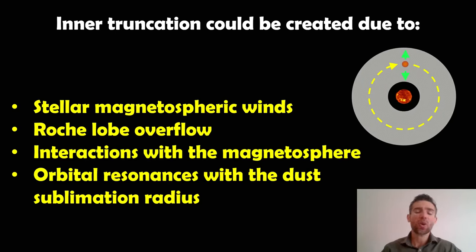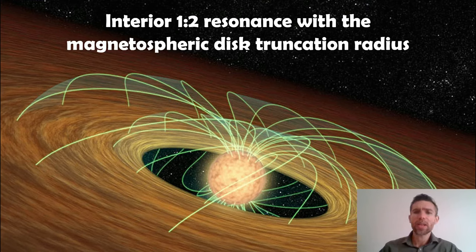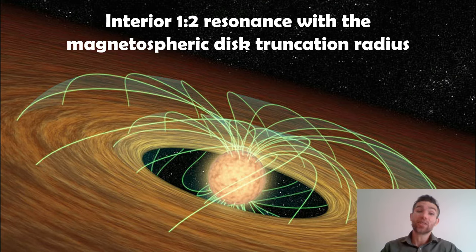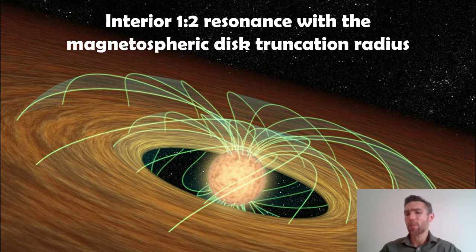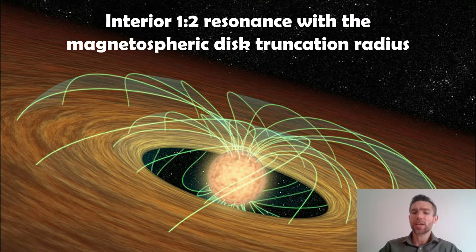So what can be causing that inner truncation? It could be due to stellar magnetospheric winds, so basically magnetic driven winds. You could have Roche lobe overflow interactions with the magnetosphere, orbital resonance with dust sublimation radii. There's quite a few things that can actually cause a truncation of that inner edge of the disk, and it could be a combination of all of those. First, there could be an inner truncation due to the magnetosphere or magnetospheric disk truncation. Basically due to the magnetic field of the star, which are quite significant on young stars, it can cause an inner truncation of this disk.